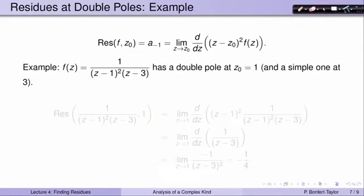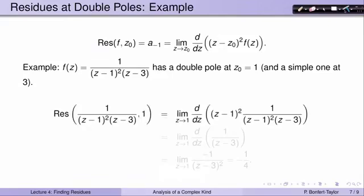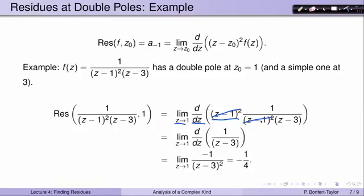Let's look at f(z) = 1/((z-1)²(z-3)). That function has a double pole at c0 = 1 and also a simple pole at 3, but we want the residue at 1. By our formula, we multiply by (z-1)², which cancels the (z-1)² in the denominator, leaving us to find the derivative of 1/(z-3) and then the limit as z approaches 1. The derivative of 1/(z-3) is -1/(z-3)². At z = 1, we get -1/(1-3)² = -1/4. So the residue of f at 1 is -1/4.